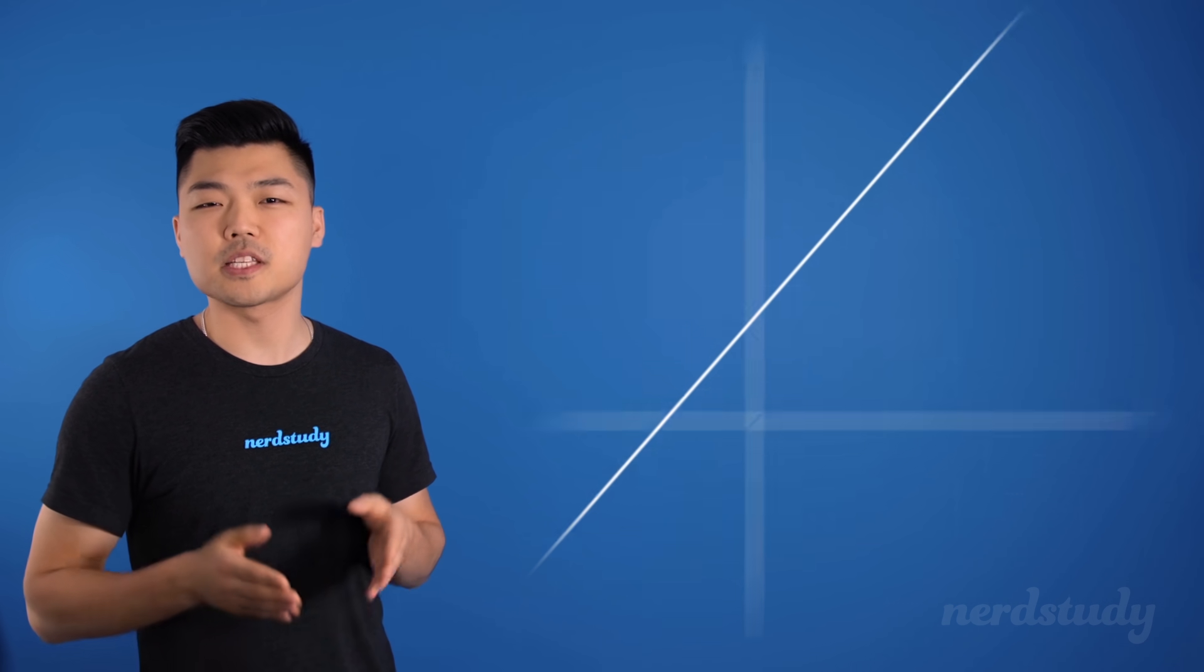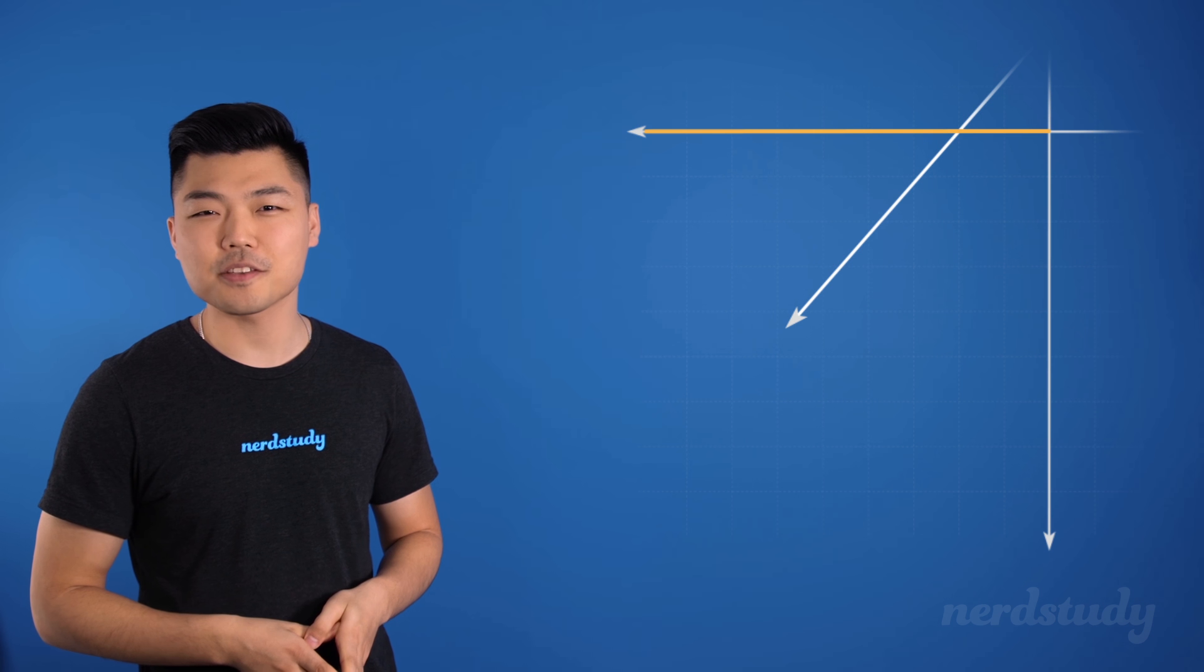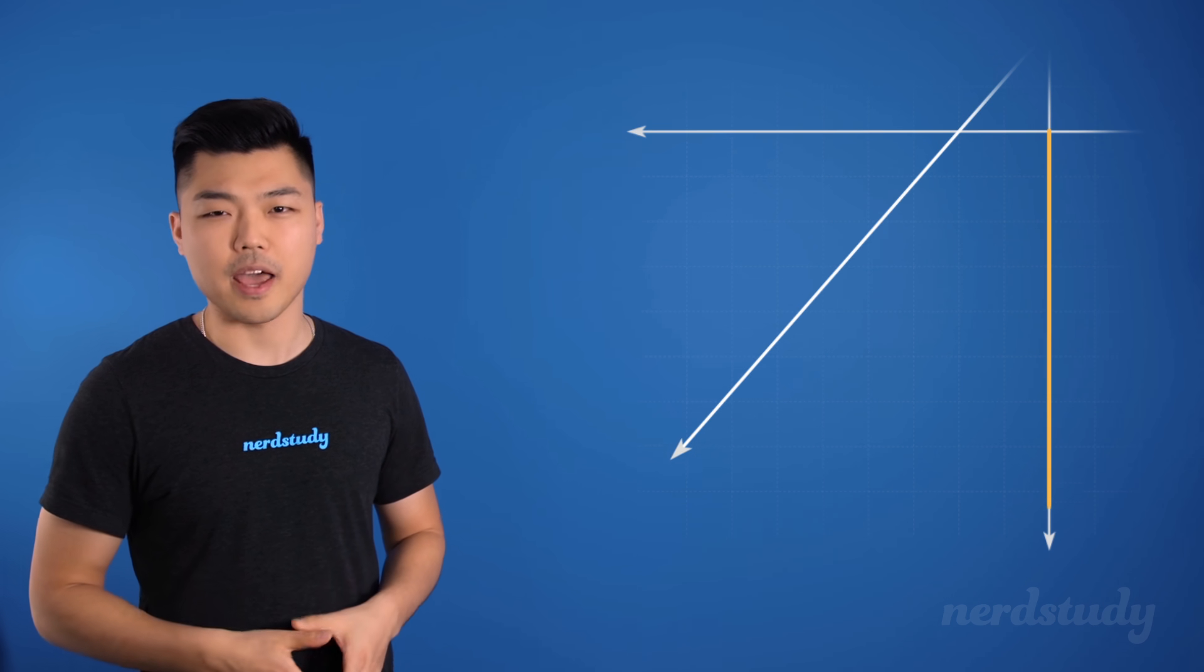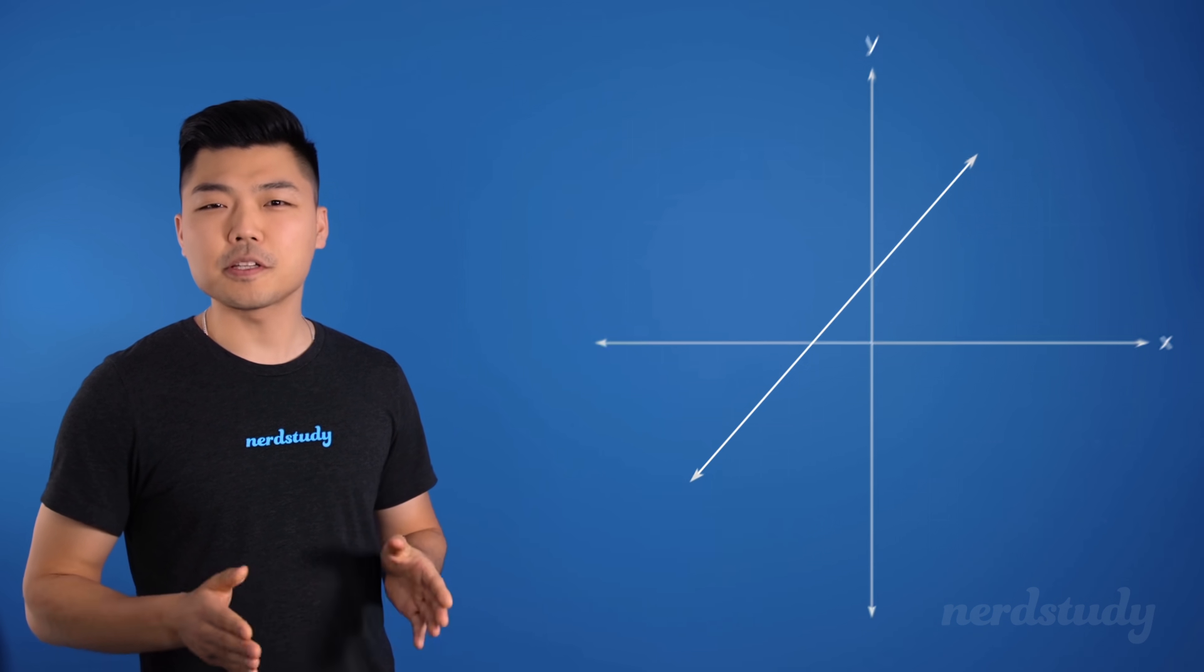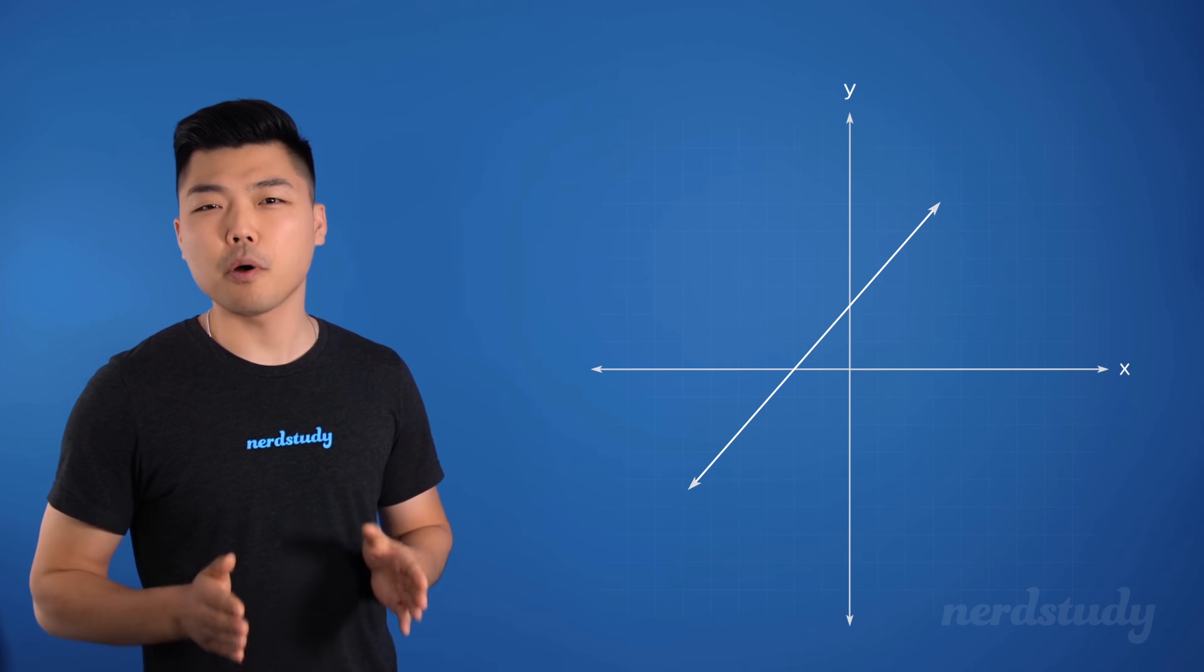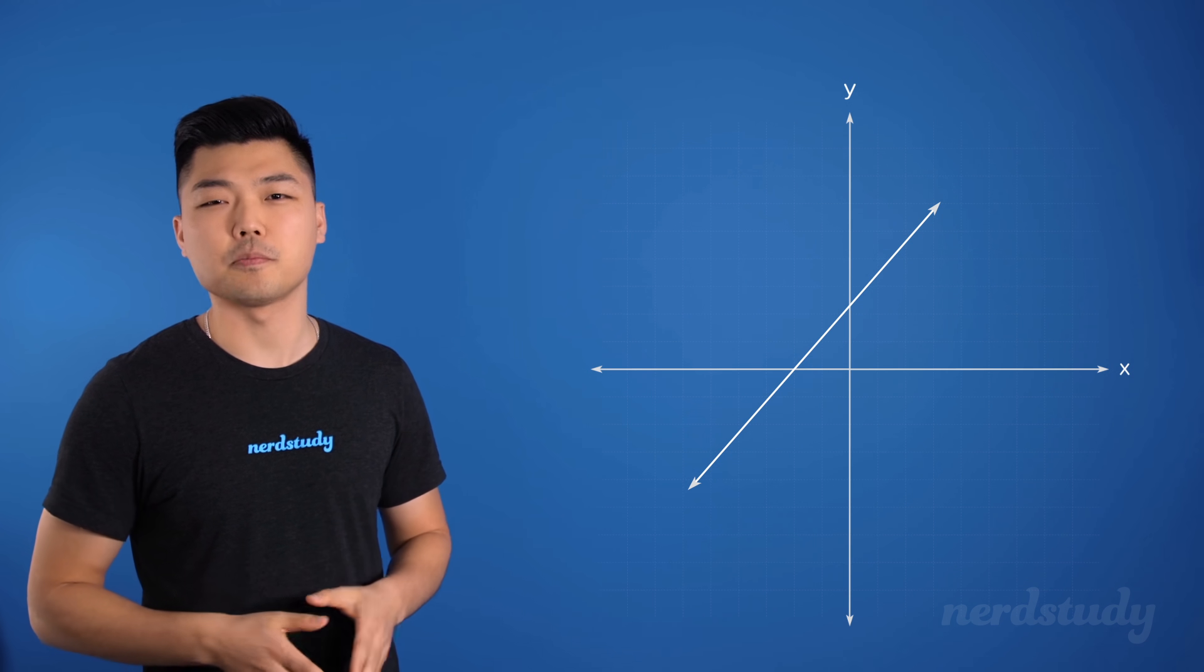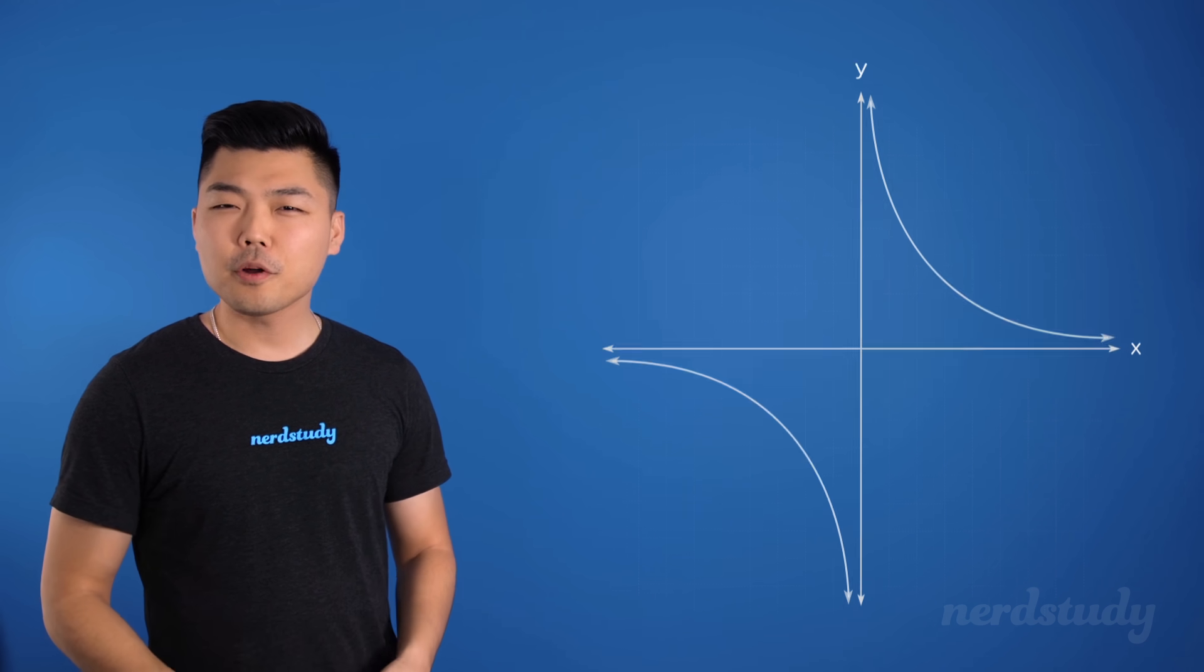And as the values go towards negative infinity on the x-axis, the graph also continues to get smaller on the y-axis. So this linear equation touches every possible y-value, which means that it has no asymptotes. But what about this graph